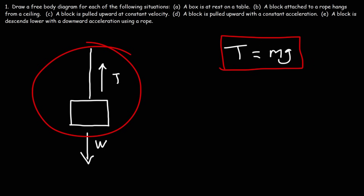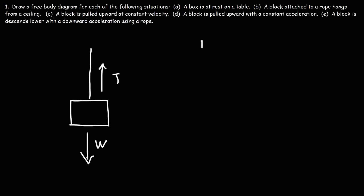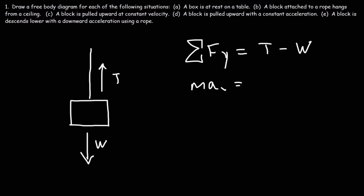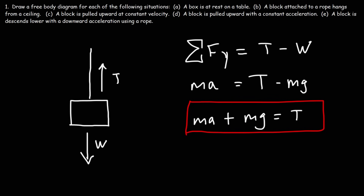Now let's move on to part D. This time, a block is pulled upward with a constant acceleration. The sum of the forces in the y direction is still tension minus the weight force, equal to ma. So this is tension minus mg. If we move mg to the other side, we have ma plus mg. So tension is greater than mg — it's mg plus ma. That's how you can calculate the tension when there's an upward acceleration.